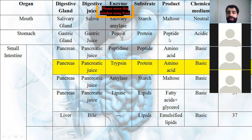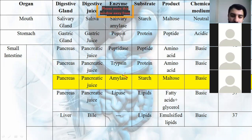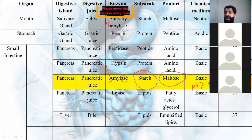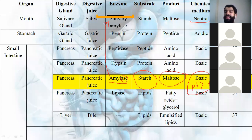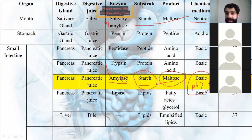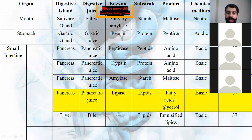The pancreas also secretes pancreatic juice containing the enzyme amylase — note it ends in '-ase.' This amylase works on starch to give maltose, and the medium is basic (pH greater than 7). This is similar to salivary amylase, but the difference is that salivary amylase works in a neutral medium (pH = 7), while pancreatic amylase works in a basic medium (pH > 7). Both produce maltose from starch.